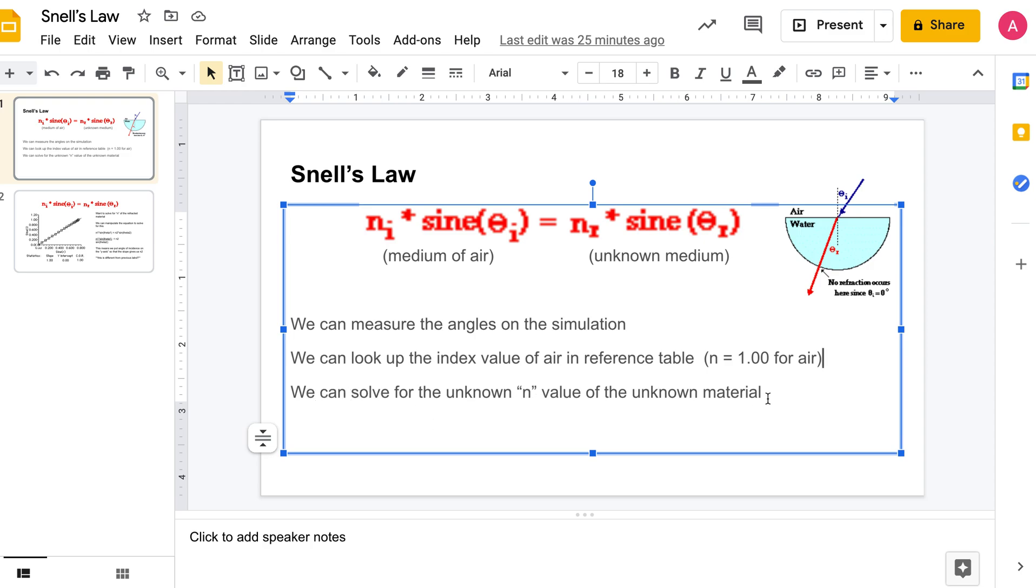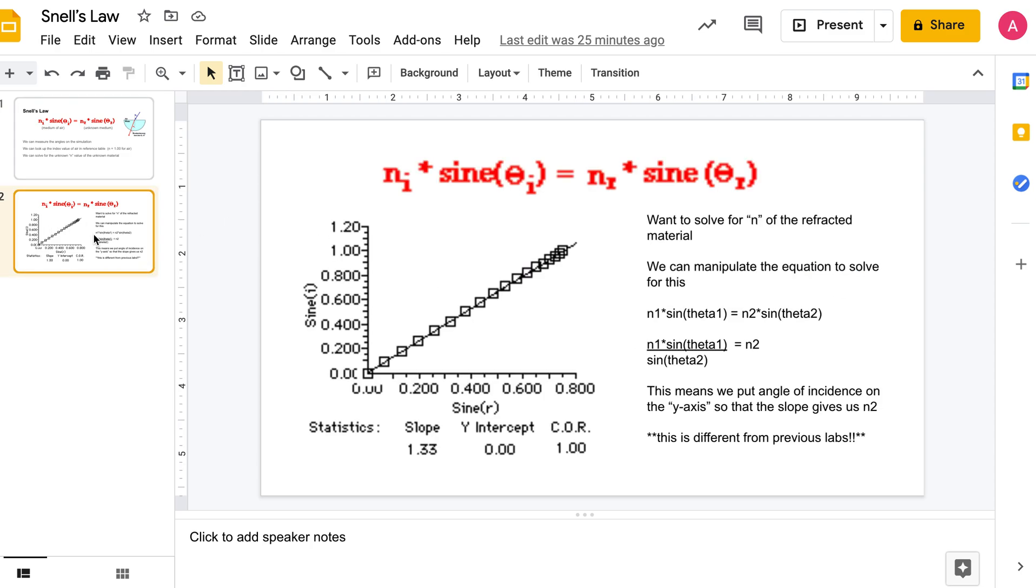We'll just be left with sine times the angle of incidence. Ultimately we want to solve for the unknown n value of the unknown material in the simulation. If I go to this next slide, what we're going to be doing is we can measure the angles, so we're going to make a chart and we're going to take the sine of that angle because this is the relationship of Snell's law.